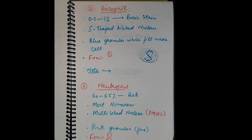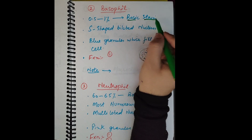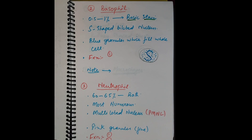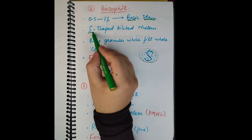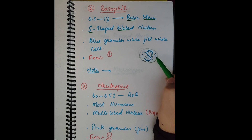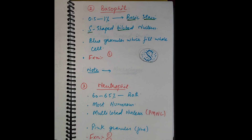Basophils are called basophils because they take up the basic stain, which is blue in color. They are 0.5 to 1 percent of all the WBCs in the blood. Their nucleus is S-shaped and bilobed. They have blue coarse granules that fill up the whole cell — scattered all over the cytoplasm — so when viewed under the microscope it is hard to distinguish the nucleus from the granules.